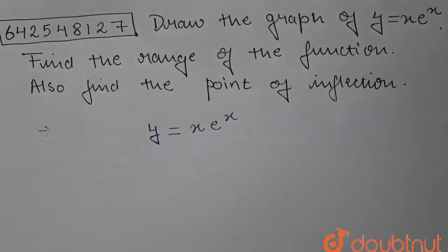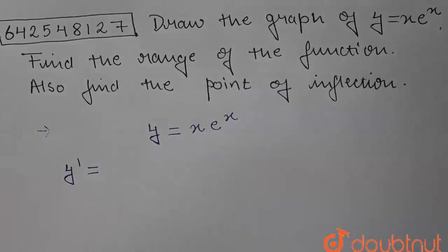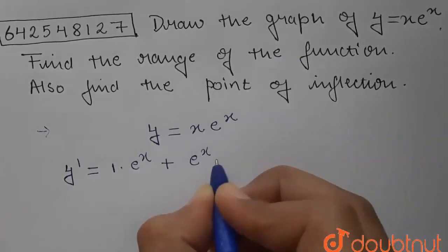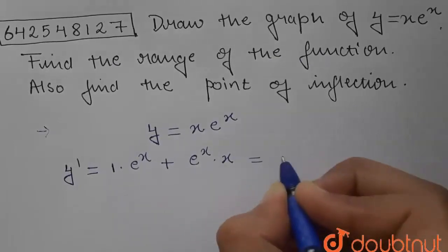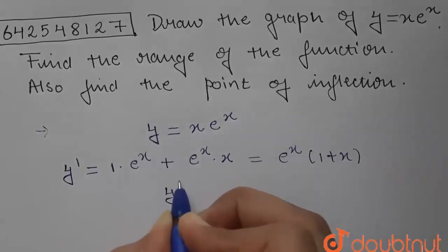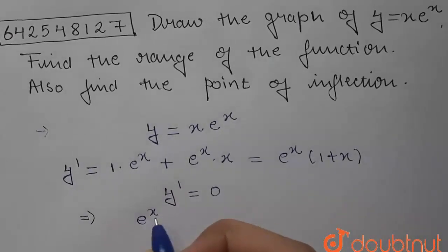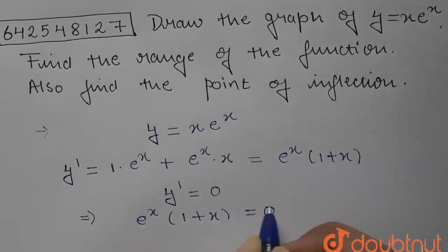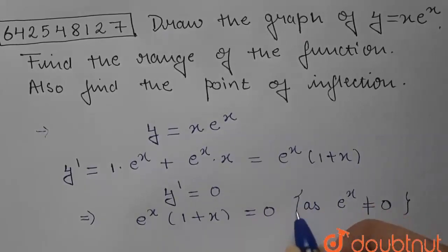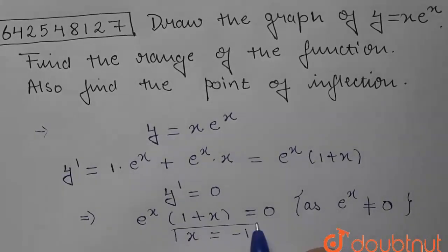Now, for finding its increasing and decreasing nature, we have to differentiate it. So we will find y dash: differentiation of x is 1, so it will become 1 times e to the power x plus e to the power x times x. We take e to the power x common, and it becomes e to the power x times (1 plus x). We equate this with 0. Since e to the power x can never be 0, x plus 1 equals 0, so x equals minus 1.